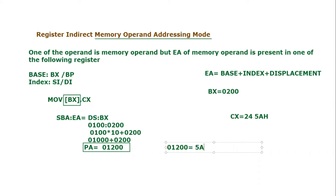After execution of this instruction, at address 01200, 5A is stored. But where does 24 go? It will be stored at address 01201. The next byte will be used. Since we are moving a 16-bit value, it cannot all store at 01200. The lower byte 5A is stored at the lower address, and the higher byte 24 is stored at 01201. I hope this example and this addressing mode are clear.